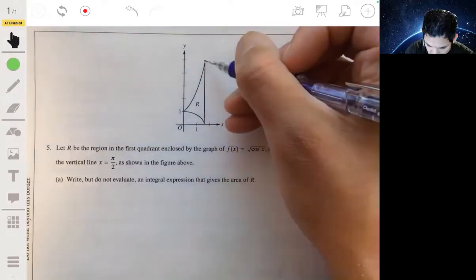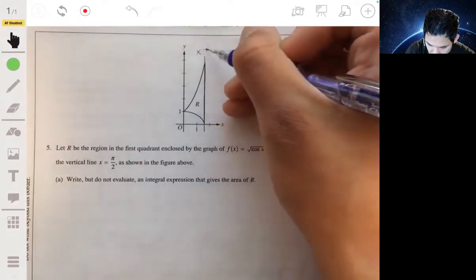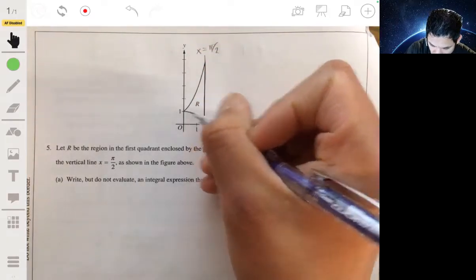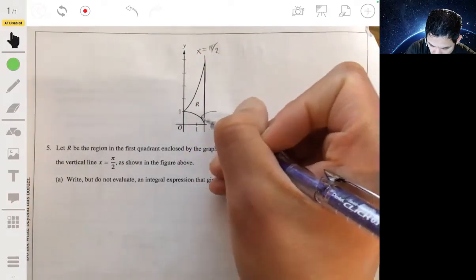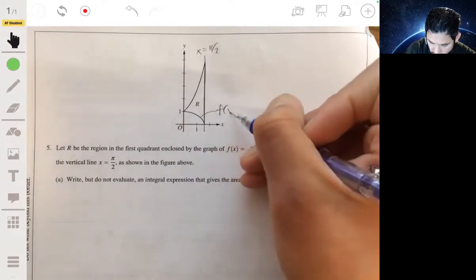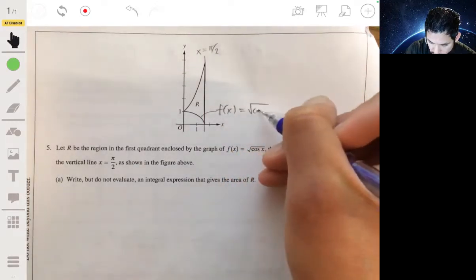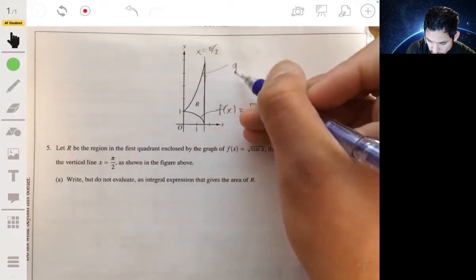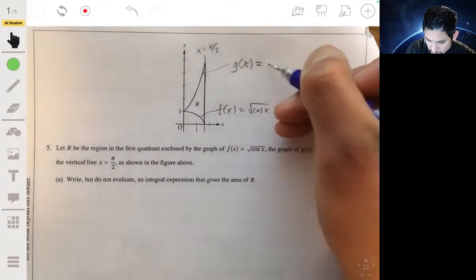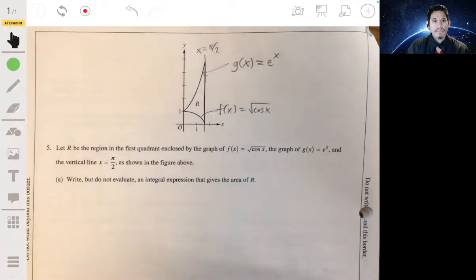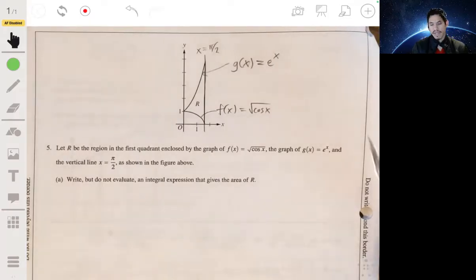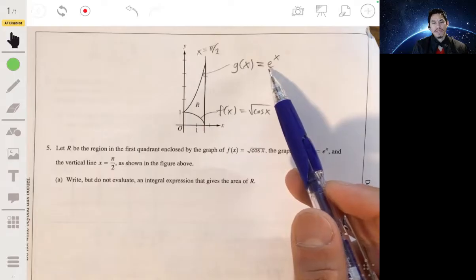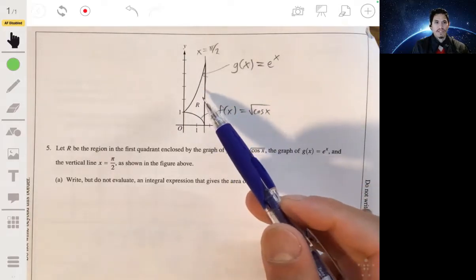Let's first label those. This is the vertical line x equals π/2, this will be the square root—so f(x) equals the square root of cosine x, and this one up here will be the g(x) function, which is equal to e^x. Make sure you know those basic functions. You may not need to know this off the top of your head, but you need to know e^x, then you can just use process of elimination.